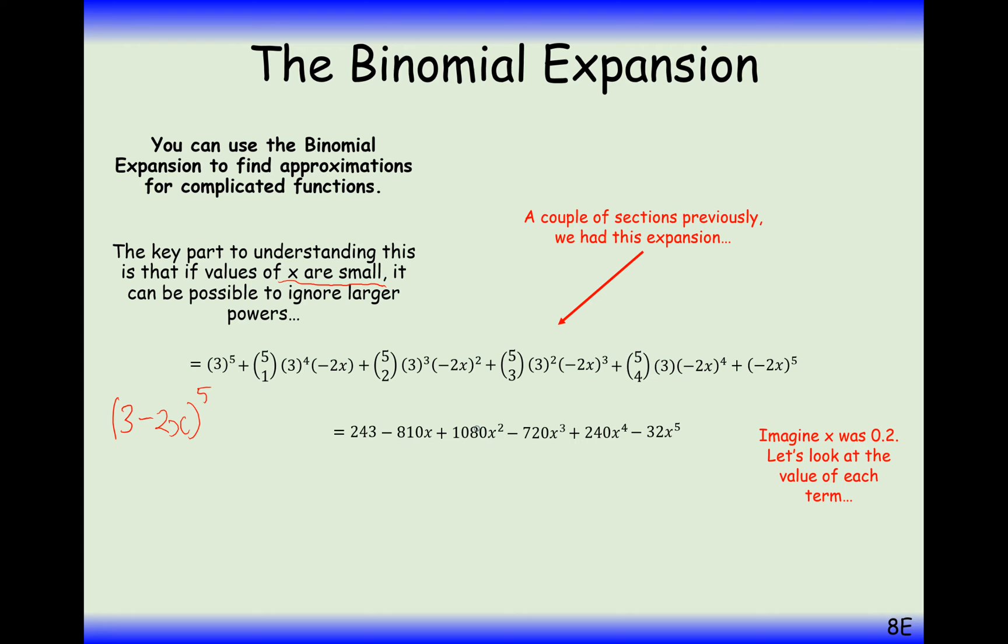This term here is going to be 1080 times 0.2 squared. And you can see what's going to happen as we start to increase the power of x. As we increase the power on the x, the 0.2 is going to get smaller and smaller and smaller and smaller.